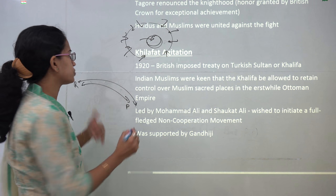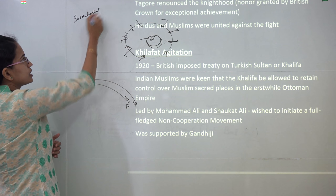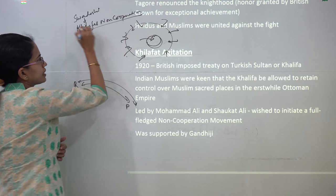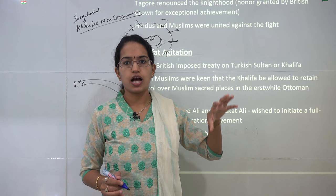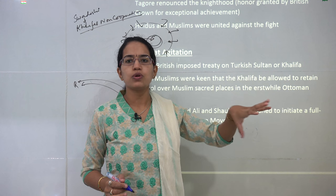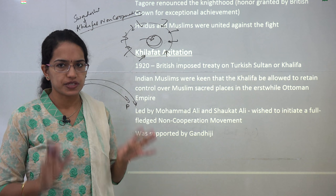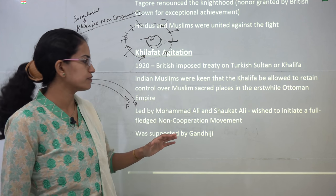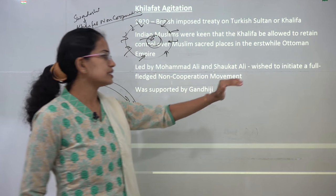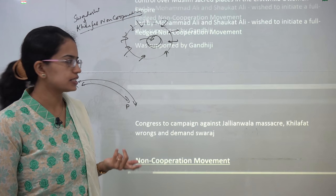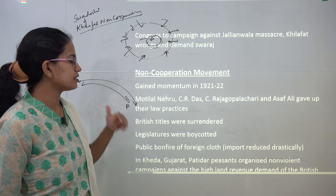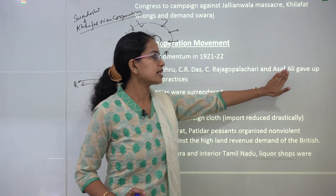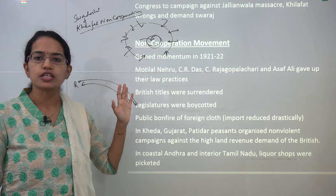After the Swadeshi movement came the Khilafat or Non-Cooperation Movement. The Khilafat movement said that the Khalifa or Turkish Sultan should rule over all the Ottoman Empire and must be granted that right. However, the Britishers did not want this. Gandhiji was in support of this policy, and Muhammad Ali and Shaukat Ali initiated a full-fledged non-cooperation movement with the Britishers. This non-cooperation movement was further strengthened by Gandhi's movement, with Motilal Nehru, C.R. Das, C. Rajagopalachari (Rajaji), and Asif Ali as major leaders.